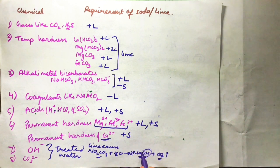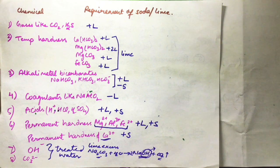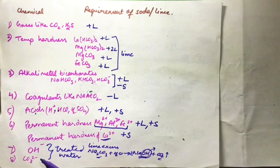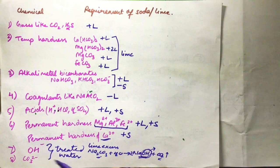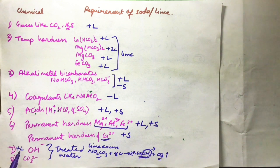This OH⁻ can be present in treated water from either lime or soda. So if treated water contains excess OH⁻, it can be attributed to both lime and soda. Therefore, in the case of OH⁻ excess, we have to add it in both lime and soda.